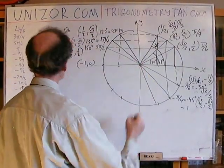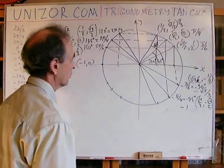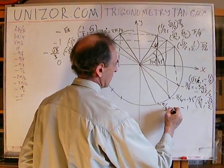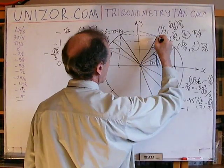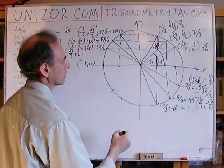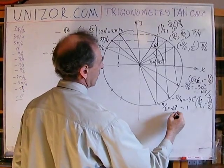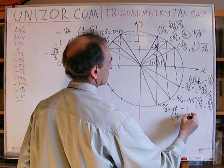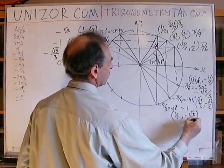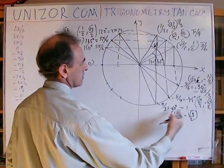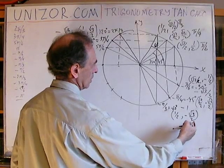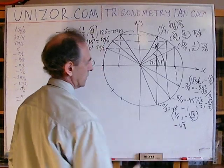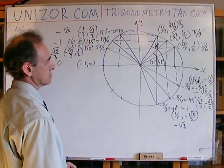Next is −π/3, which is −60 degrees. By symmetry with +60°, the coordinates are (1/2, −√3/2) — I retain the x-coordinate and change the sign of the y-coordinate. Their ratio, y over x, is −√3. That's the tangent for −π/3.